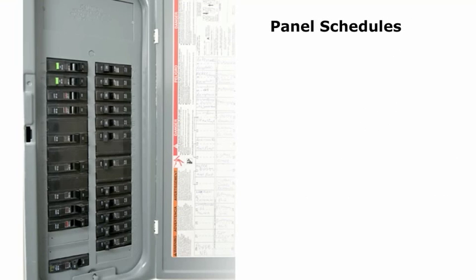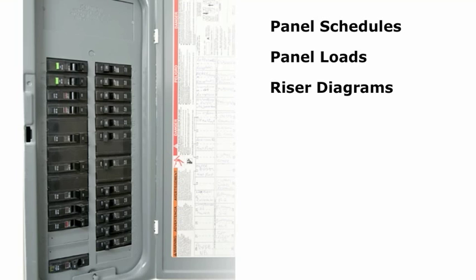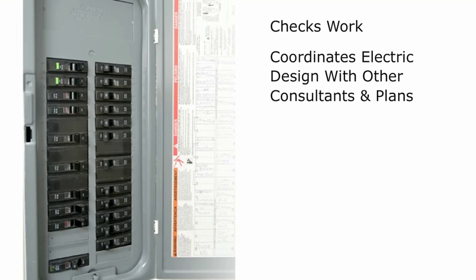Panel schedules are prepared that list all of the circuits for each panel, including those for emergency equipment. Panel loads are computed that show how much power is circuited through that panel. The engineer prepares riser diagrams that show how wiring is run vertically and designs the panels, switchboards, and service equipment. After computing the wiring sizes and protective equipment ratings, the engineer checks the work, then coordinates the electrical design with the other consultants and the architectural plans and continues to make changes as needed.